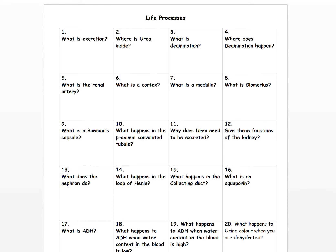Question number eight: what is a glomerulus? A glomerulus is a network of blood vessels that allows for the filtration of blood into filtrates, so into the Bowman's capsule. Question number nine: what is a Bowman's capsule? It's a C-shaped capsule that receives filtrate from the glomerulus — that's filtered blood — things like water, urea, salts, glucose, amino acids, anything smaller than a protein. It's just a site of filtration.